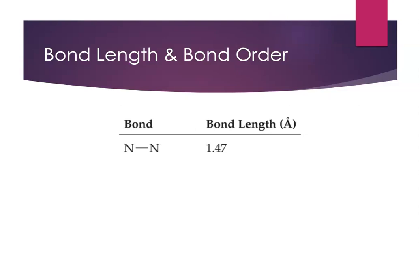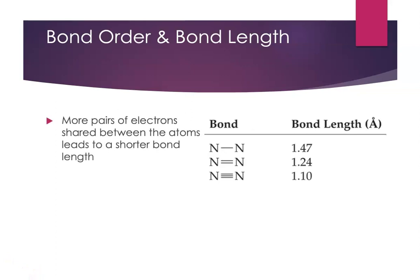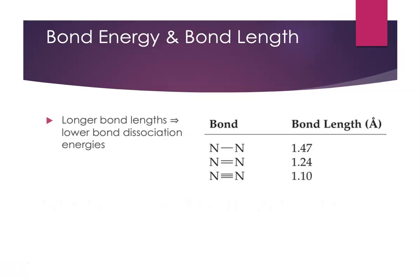How does bond length relate to bond order? For a nitrogen-nitrogen single bond with a bond order of one, the bond length is 1.47 angstroms; a double bond is 1.24 angstroms; a triple bond is 1.10 angstroms. Clearly, the more pairs of electrons shared between the atoms, the shorter the bond length. As bond order increases, bond length decreases. Short bonds are strong bonds — those short nitrogen-nitrogen triple bonds have the shortest bond length and the highest bond energy.